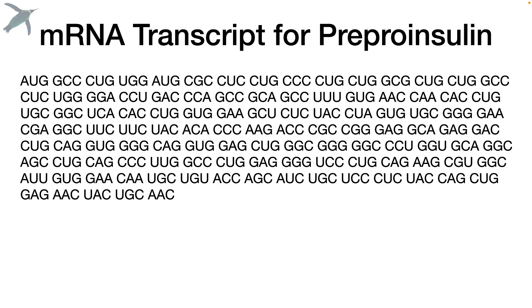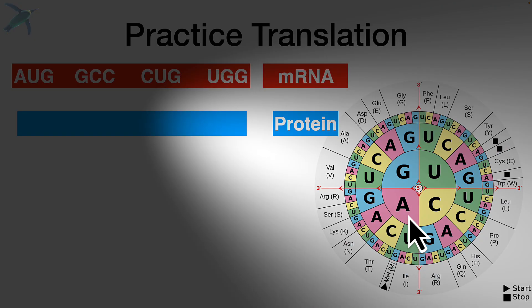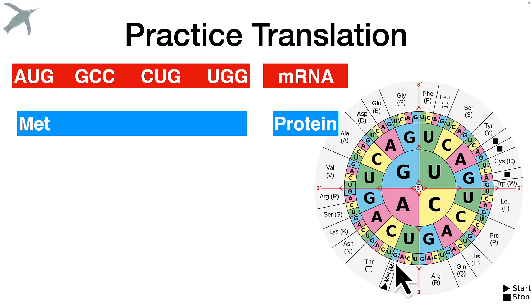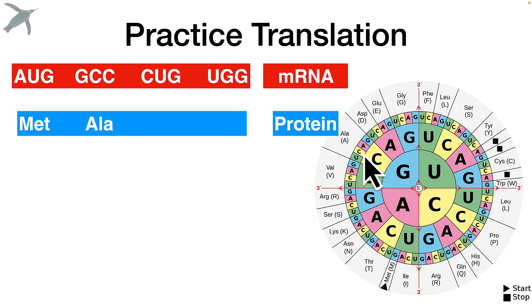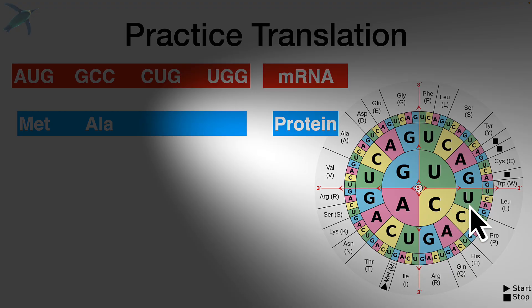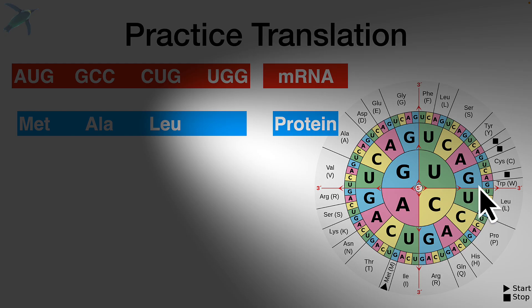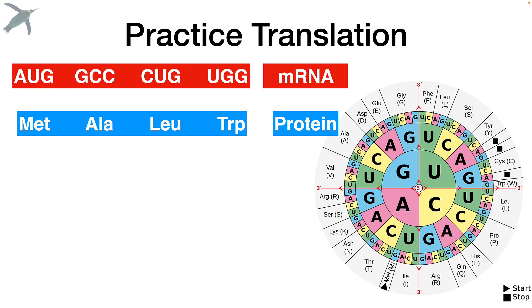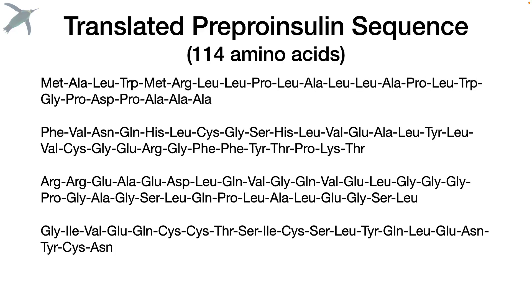We've got the mRNA transcript for pre-proinsulin, and I want you to translate the first four codons. The first codon is AUG — that's methionine, which actually means start. Next, GCC translates to alanine. CUG gives us leucine. And UGG gives us tryptophan. That's how you translate. I'll do the rest — this is pre-proinsulin: insulin with the shipping box and the bubble wrap.